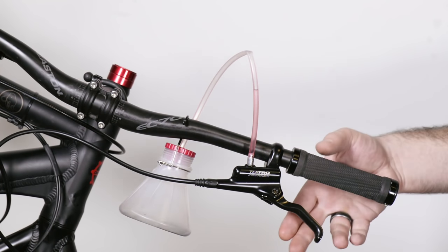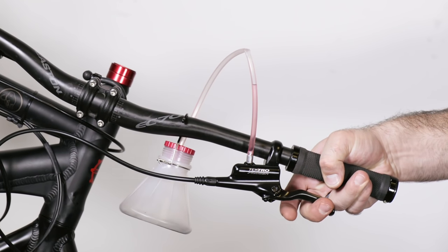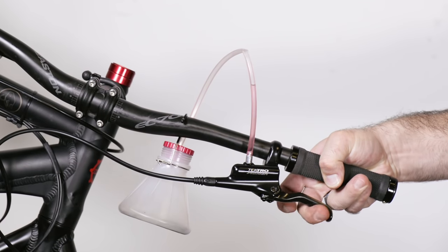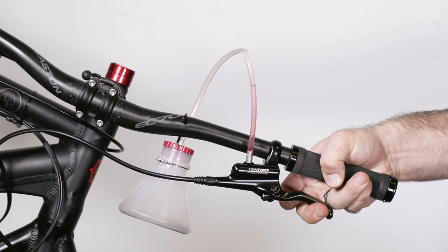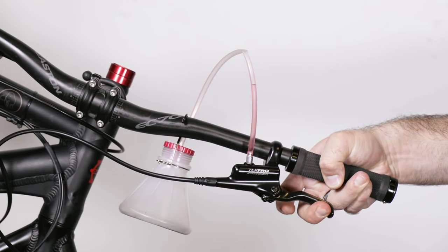Remove the clamp and pump the lever several times to ensure there are no more air bubbles coming out of the lever. You can also tap on the hose and lever body to work any of these loose.